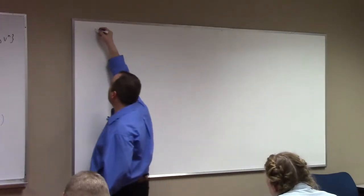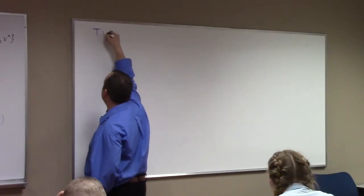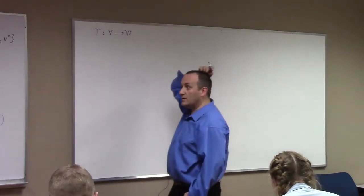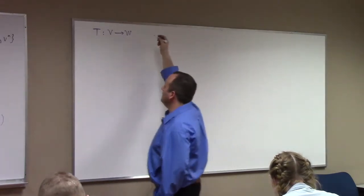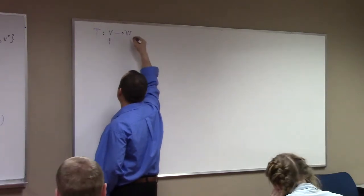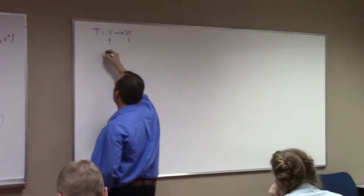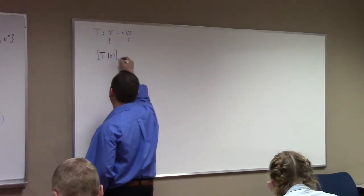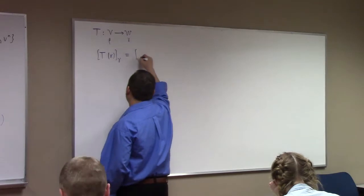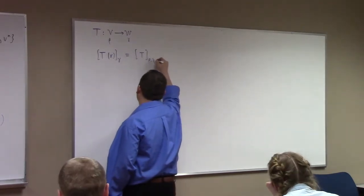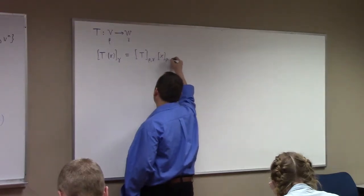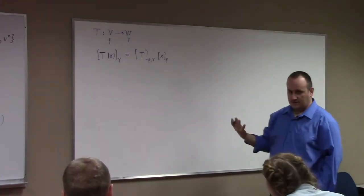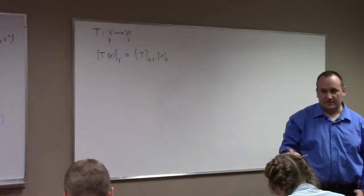So I'm going to examine: if we have a linear transformation T going from V to W, with basis beta here and basis gamma over there, we discussed that if you have T(x) and calculate the gamma coordinate of that, we can write it as the matrix T_{β,γ} times x_β. This is the formula involving the coordinates of the domain, the codomain, and the matrix of the abstract transformation.